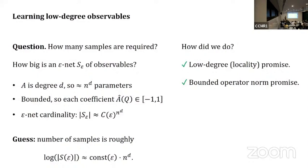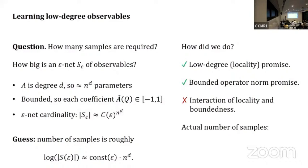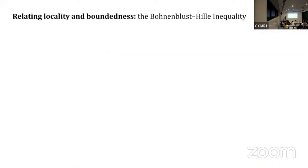Except it's not, it's not even close because this back of the envelope computation doesn't fully appreciate the interaction of locality and boundedness. The actual number of samples is logarithmic in N.